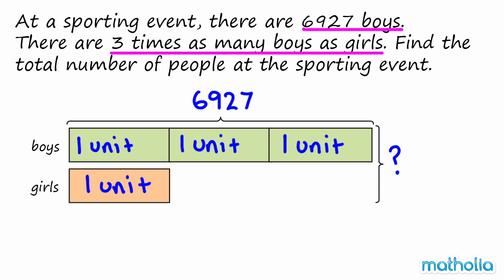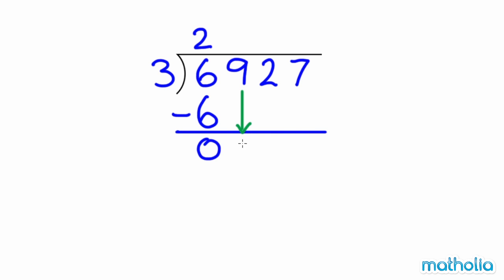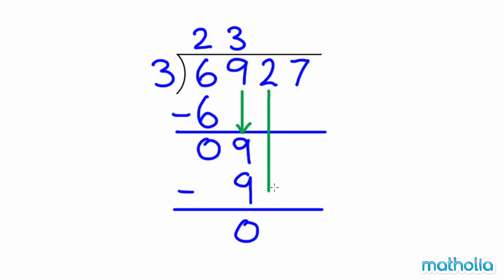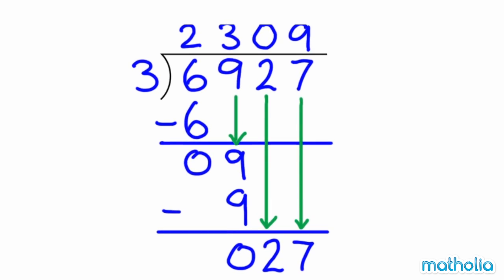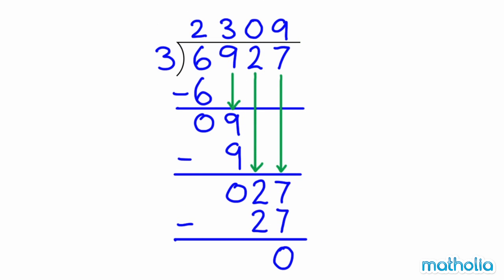First, let's find the value of 1 unit. We can find the value of 1 unit by dividing the number of boys by 3. 6,927 divided by 3 equals 2,309. So 1 unit is equal to 2,309.